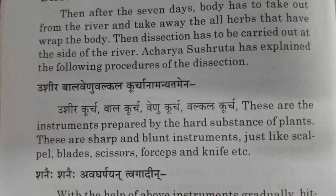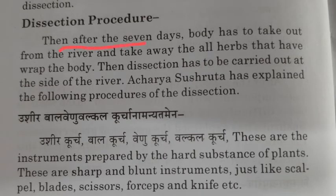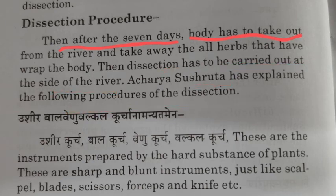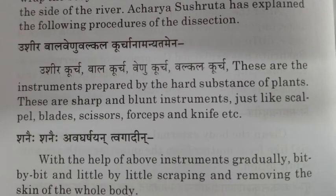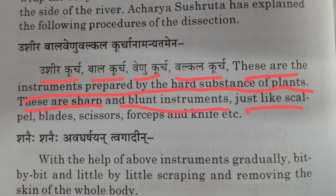Next comes the dissection procedure. After seven days, the body has to be taken out from the river and all the herbs that have been rubbed on the body are removed. Then dissection is carried out at the side of the river. Acharya Sushruta has explained the following procedure: Ushira Kurcha, Bala Kurcha, Venu Kurcha, and Valkala Kurcha — these are instruments prepared from hard plant substances, both sharp and blunt, similar to scalpel blades, scissors, forceps, and knives in modern terms.